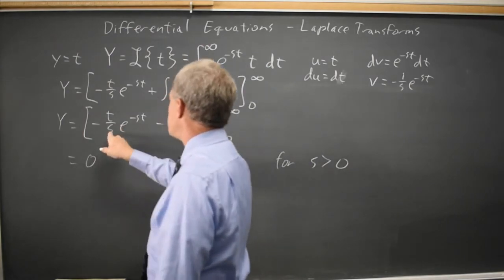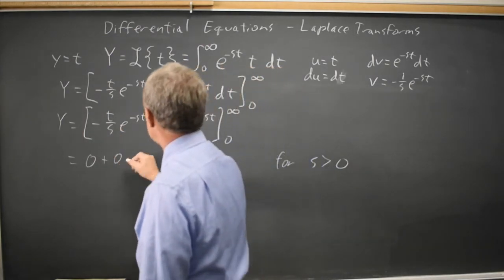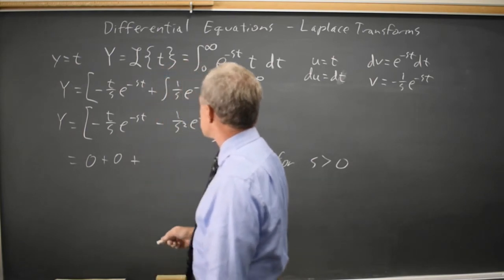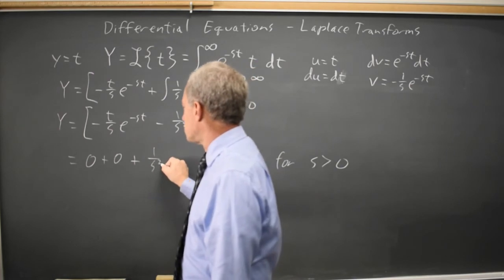At zero, negative t over s is zero, and minus the negative is plus. At zero, e to the zero is 1, so that's just 1 over s squared.